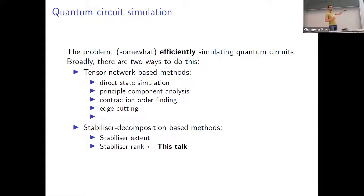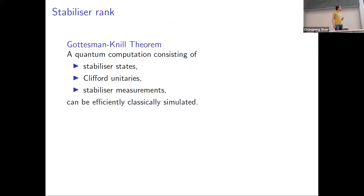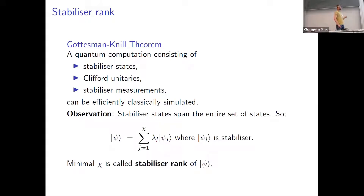In this talk, I'll be talking about stabilizer rank — there's also the technique of stabilizer extent, but that won't be relevant. So what is stabilizer rank? Most of you are familiar with the Gottesman-Knill theorem, which says that if you have a computation consisting of stabilizer state preparation, Clifford unitaries, and stabilizer measurement, you can efficiently classically simulate this. Stabilizer states actually span the entire set of quantum states, so any arbitrary state |ψ⟩ can be written as a linear combination of stabilizer states. The minimal number of terms needed is the stabilizer rank, denoted χ.